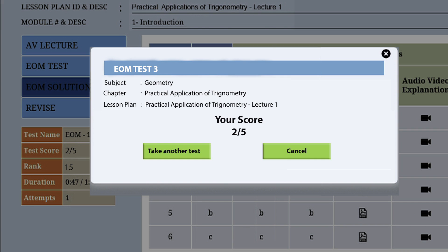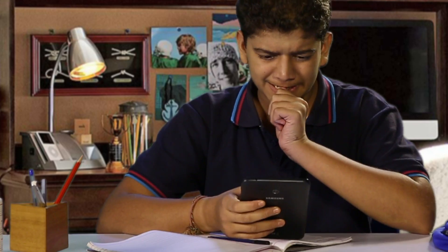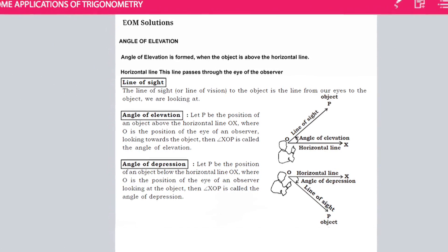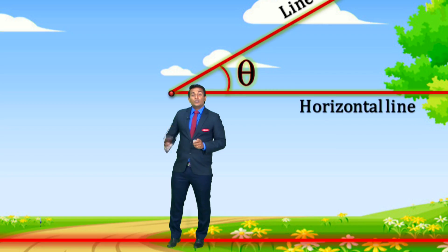In the third test, I could get only two out of five. Then I clicked on 'Solution' and confirmed my answers. To my surprise, the solutions were in the form of text from RoboBooks as well as AV lectures, so I could understand where I went wrong.